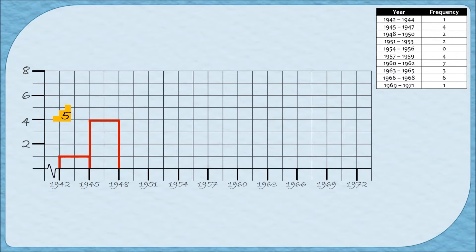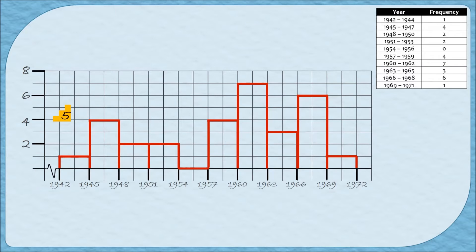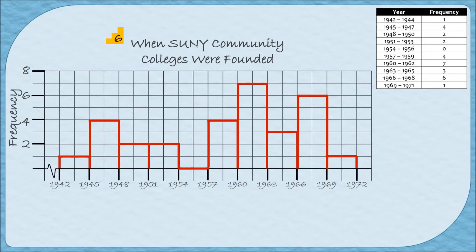And there we go. You can see we need that one extra space on the horizontal axis — this time so the very last bar has a place to end. If 1972 wasn't there, there'd be nowhere for that last bar to end. For step six, the graph has an appropriate title: 'When SUNY Community Colleges Were Founded.' The vertical axis is labeled 'Frequency' and the horizontal axis is labeled 'Year.' Optionally, you can shade bars or add labels to their tops.